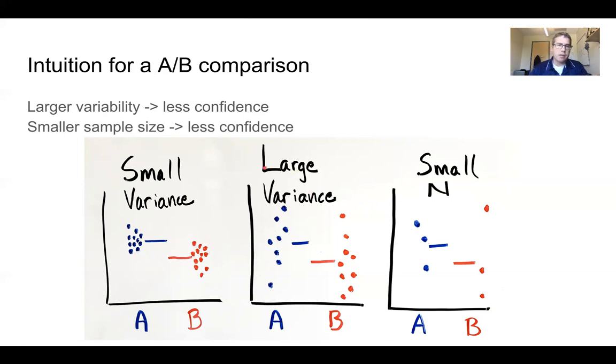When we move to this panel in the middle, we have the same difference between group A and group B on average, but our variability is much larger. That leads us to have less confidence in something like a t-test. Now, when we move to this panel over here, where we have very few data points, three, we have the same difference between group A and group B on average, but we have very few data points. And this gives us even less confidence.